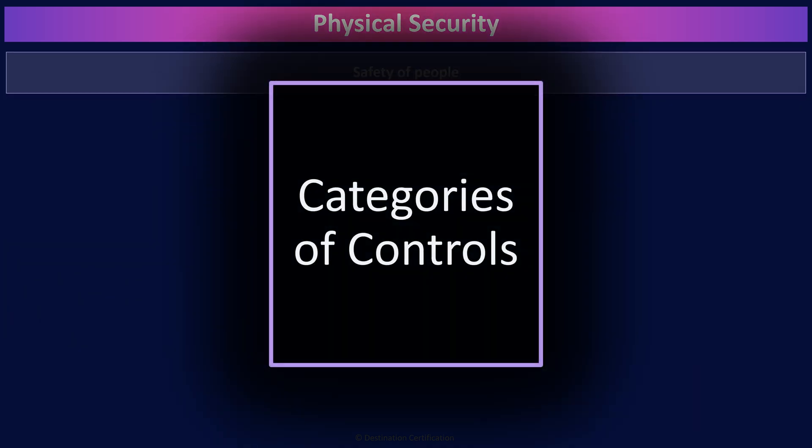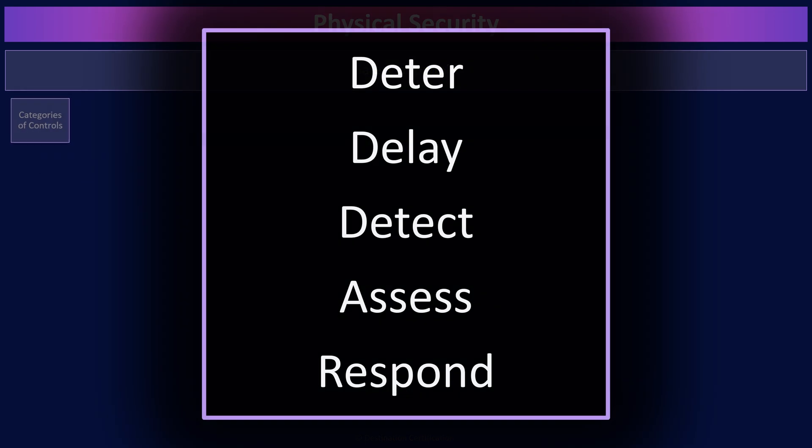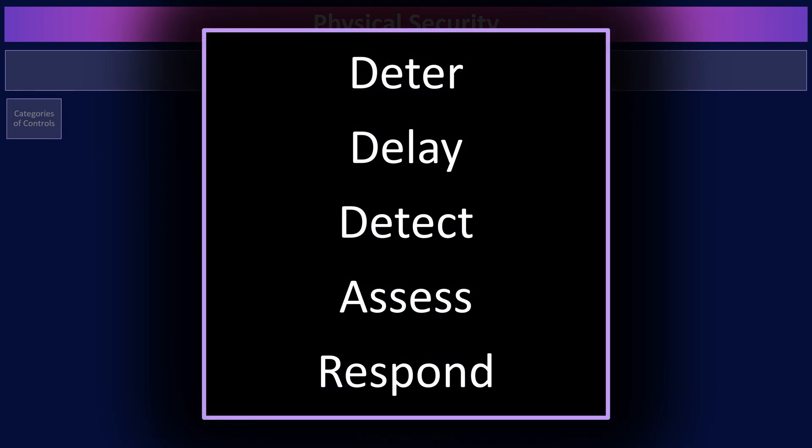There are five categories of controls in physical security: deter, delay, detect, assess, and respond. Deterrent controls discourage things like trespassing, property damage, theft, and intrusion through signage and environmental design of a building and the land around it. Delay controls delay a risk from occurring — for example, locks delay an attacker from gaining unauthorized access. Detective controls detect if a risk has occurred; CCTV cameras are a perfect example. Assess controls determine the method of an attack and the target. And respond controls take appropriate actions to remediate the risk.